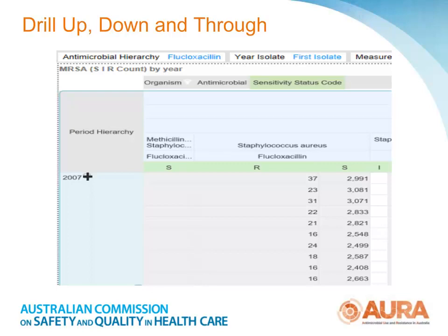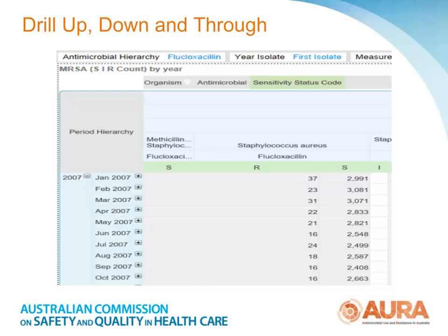Where the members of a dimension are part of a hierarchy and you see a plus button in the grid, you can use these to hone in on specific data you are interested in. For example, in this view we have MRSA isolates for 2007. If you are interested in more detail about in which month in 2007 these were collected, just click on the plus sign beside 2007. If you want to know which date in January, click on the plus sign beside January. To collapse these, just click on the minus signs.